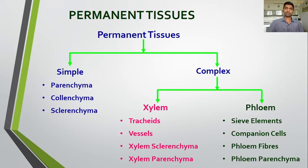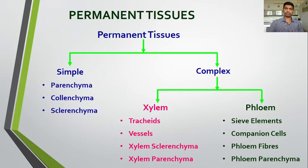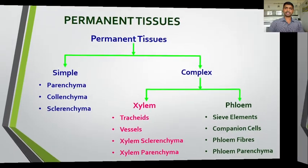Another basis for classifying meristematic tissue is the position of the meristem. For permanent tissue, we divide it into two types: simple and complex tissue. Further, complex tissues are divided into two types — xylem and phloem. Now one by one we are going to study the simple tissue.